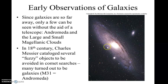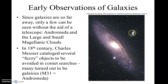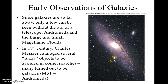This is Andromeda. There are several really important things about this. This bright object in the upper right here is actually another galaxy — actually, it's a star within our galaxy that just happens to line up with Andromeda. So that's not part of Andromeda at all.